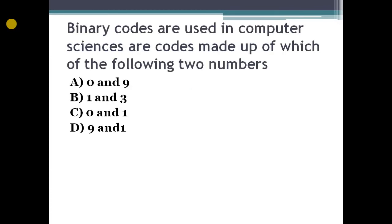Binary codes are used in computer sciences are codes made up of which of the following two numbers? Option A: 0 and 9. Option B: 1 and 3. Option C: 0 and 1. Option D: 9 and 1. So what's the right answer? Binary codes are 0 and 1.